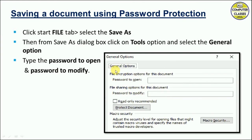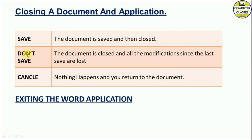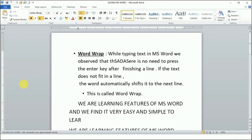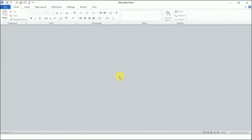Next is closing a document and an application — there is a difference between these two. To close the document, click the File tab and select the Close option. If your document is not saved, it will ask you to save. The options are: Save (the document is saved and then closed), Don't Save (the document is closed and all modifications since the last save are lost), or Cancel (nothing happens and you return to the document).